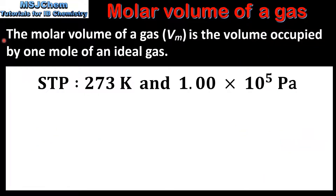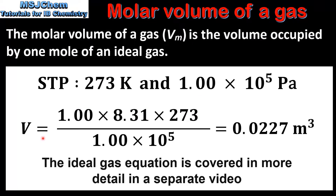The molar volume of a gas is the volume occupied by one mole of an ideal gas. The molar volume must be stated at specific conditions. In this video I'll be using the conditions of STP, which are a temperature of 273 Kelvin and a pressure of 100,000 Pascals. Here we can see these values plugged into the ideal gas equation, which has been rearranged to calculate for volume.